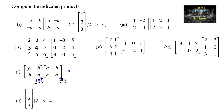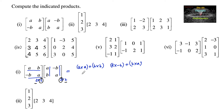The first element is obtained by first row with first column: A into A plus B into B. First row with second column: A into negative B plus B into A. Second row with first column: negative B into A plus A into B. Second row with second column: negative B into negative B plus A into A.